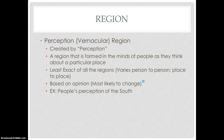The last region type is the perception or vernacular region. It is created by perception — a region formed in the minds of people as they think about a particular place. It is the least exact of all regions, as it varies from person to person based on opinion and is most likely to change over time. One notable example is people's perception of 'the South.' Everyone has a different idea of what the South is — whether defined by climate or by the Confederate States of the Civil War — and that is why the vernacular region is the least exact.